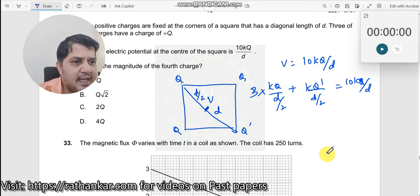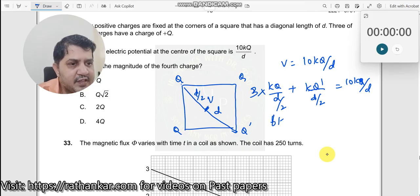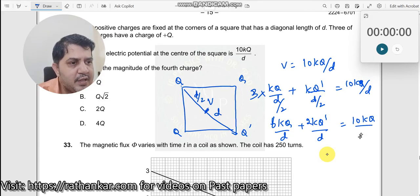Now what will I do? I will just take this 2 upwards. This becomes 6kq divided by d plus kq dash. This d by 2 also goes upwards, so 2kq dash divided by d is equal to 10kq divided by d.